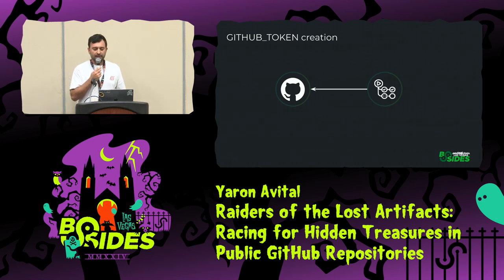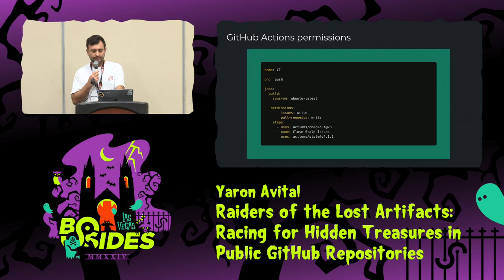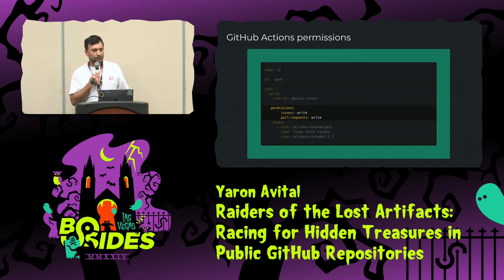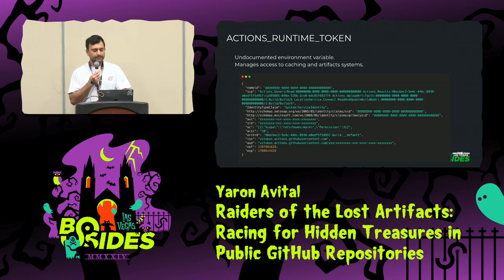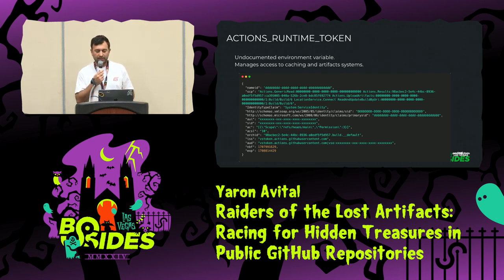The way things work in GitHub Actions: every time a workflow starts, an ephemeral short-lived token called the GitHub token is created. This is how the pipeline can interact with the repository — clone the code, push code, and do things like that. The permissions of the GitHub token are basically up to you; you can configure it inside your YAML pipeline. If you don't, the default configuration from the repository will kick in. As for the Actions Runtime Token, it's a different type of token — you can use it to access the cache system, upload a new artifact, or get a new cache entry.